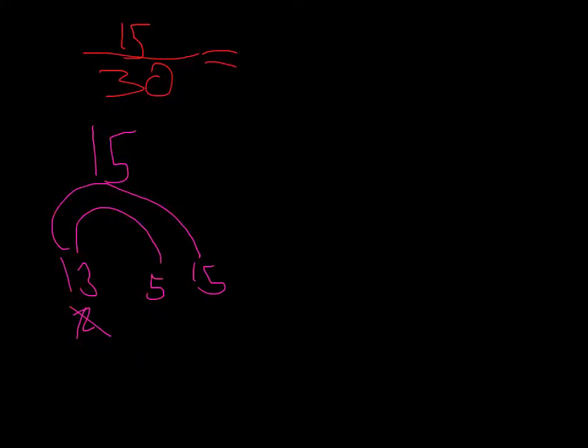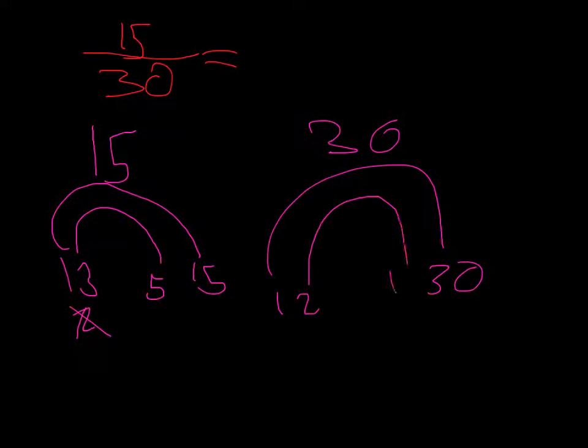Here we have 15 over 30. Here we are going to be needing rainbow fractions. So let's get through it. Is 2 divisible by 15? No. Is 3? Yeah. By 5. Then we move on to 30. Is 2 divisible by 30? Yes. And then we move on to 3. Yes, 10.